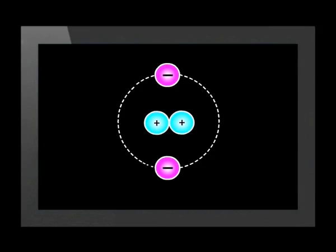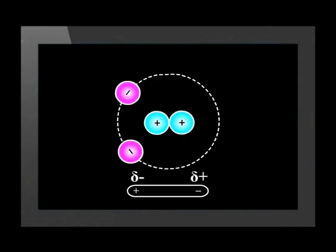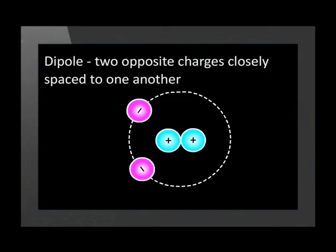Under normal circumstances, an atom such as helium, shown in this diagram, is non-polar as there is no unequal distribution of charge within the atom. However, at a single instant in time, the electrons may be positioned more to one side of the atom than to the other. This results in an induced dipole being formed. A dipole means two opposite charges closely spaced to one another — the left side of the atom is negatively charged and the right side is positively charged. The term dipole literally means two poles: a positive and a negative pole.